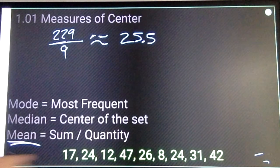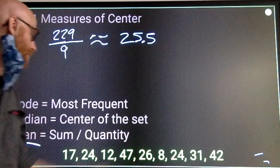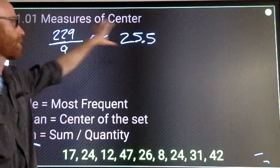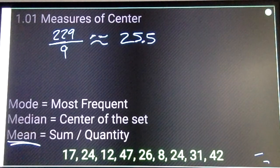Now, it should make sense to me when I look at my numbers, the mean should come somewhere in the center of them. So we got some 40s, we got some 12s, we got some 20s, 30s. 25.5 sounds pretty reasonable, so I don't think I did terribly with my addition.